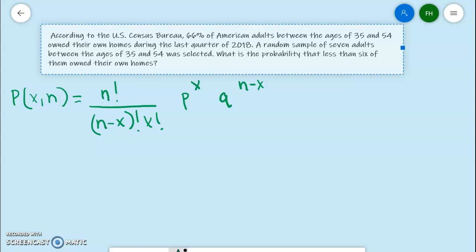Okay, let's look at this problem. According to the U.S. census, 66% of American adults between the ages of 35 and 54 owned their own homes during the last quarter of 2018. A random sample of seven adults between the ages of 35 and 54 was selected. What is the probability that less than six of them owned their own homes?